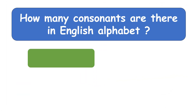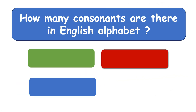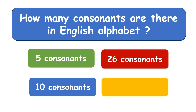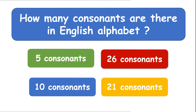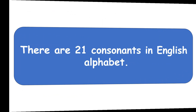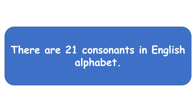How many consonants are there in the English alphabet? Twenty-one consonants. There are twenty-one consonants in the English alphabet.